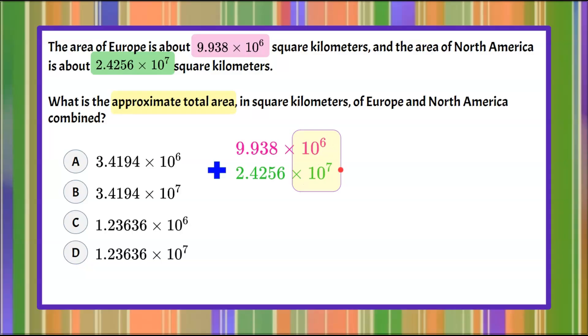Just as when you're combining algebraic terms, they must have the same variable with the same exponent. The same is true for powers of 10. In order to add these values, their exponents need to be the same. So I need to either convert the first one to 10^7 or convert the second one to 10^6.